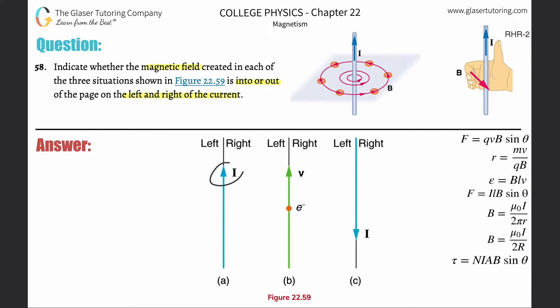If you notice, if the current's pointing up, it exactly mimics this particular picture up here. So as you point your thumb up, your fingers will curl around that particular current, and therefore on the left hand side...